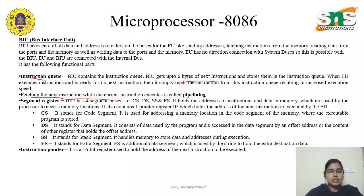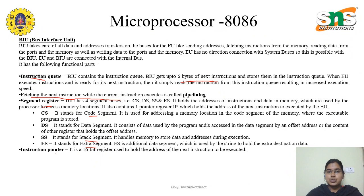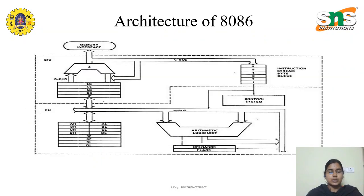The BIU also has four segment registers: CS (Code Segment), DS (Data Segment), SS (Stack Segment), and ES (Extra Segment). Additionally, there is the Instruction Pointer, which is a 16-bit register used to hold the address of the next instruction to be executed.